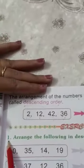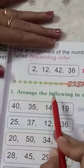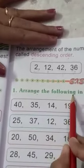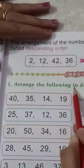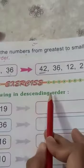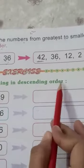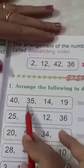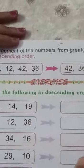Now we will start exercise number 1. Arrange the following in descending order. Arrange the following in descending order.